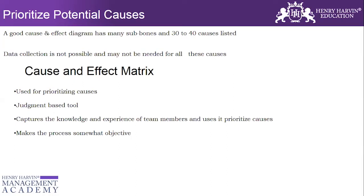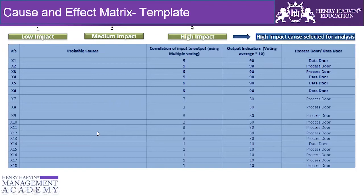Therefore, I would like to talk about a tool which is known as the Cause and Effect Matrix. The Cause and Effect Matrix is a tool used for prioritization of causes. It's a judgment-based tool that captures the knowledge and experience of team members and uses it to prioritize causes, making the process somewhat objective.